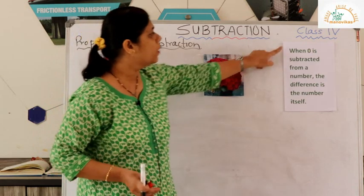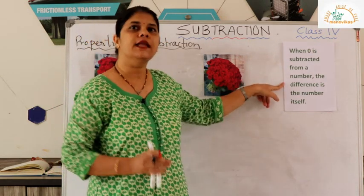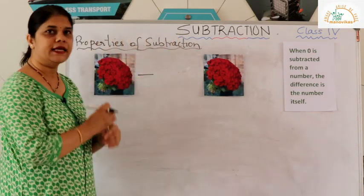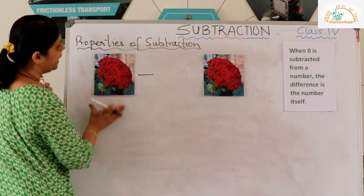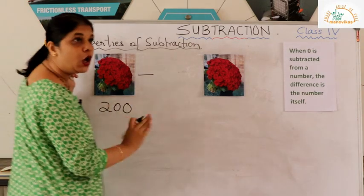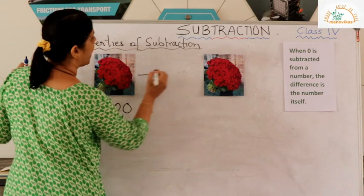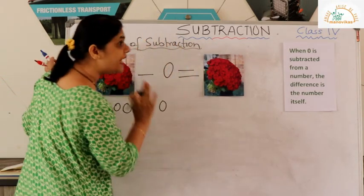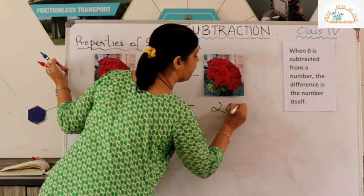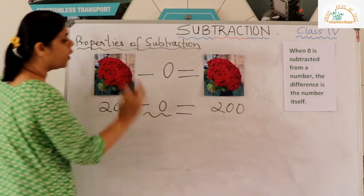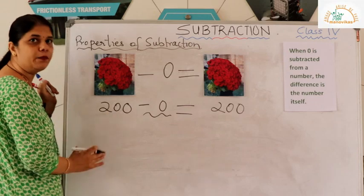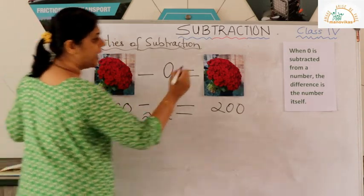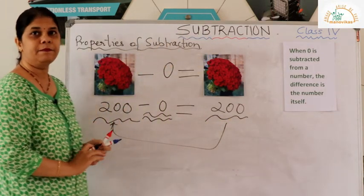The second property: when zero is subtracted from a number, the difference is the number itself. For example, I have a bouquet with 200 roses and I do not take away any roses. So 200 minus zero equals 200 — the roses are still there because none were taken away. This clearly explains that when zero is subtracted from any number, the answer is the number itself.